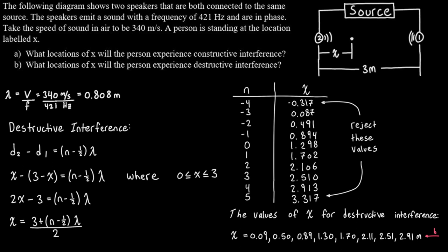Those are the locations where you'll hear a quiet sound because the two sound waves are half a wavelength offset and cancel each other out. Keep in mind this was a one-dimensional problem — moving only in a straight line. In a two-dimensional situation, with speakers and a person moving in 2D, it gets much harder to write equations for D1 and D2. But the procedure is the same: for constructive interference, the difference in distances is a multiple of the wavelength; for destructive interference, it's half a wavelength off.